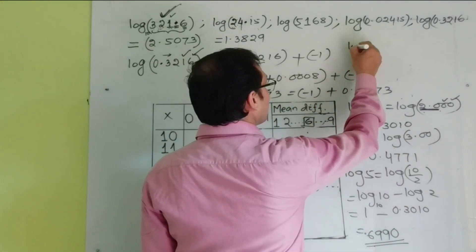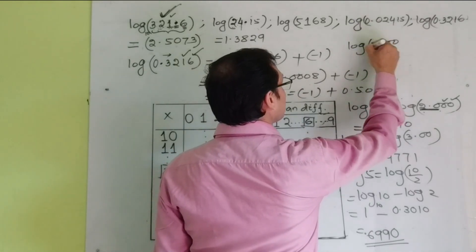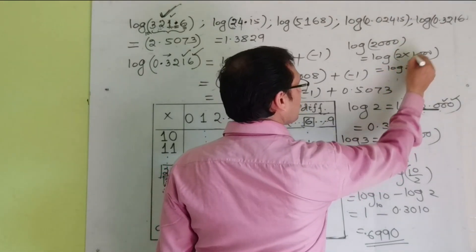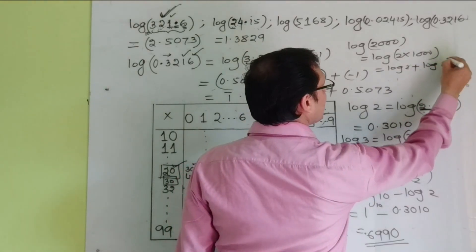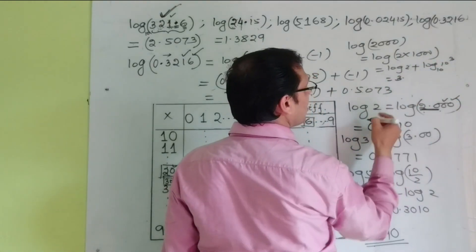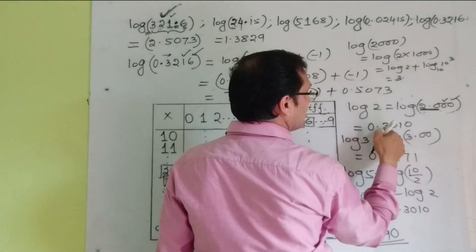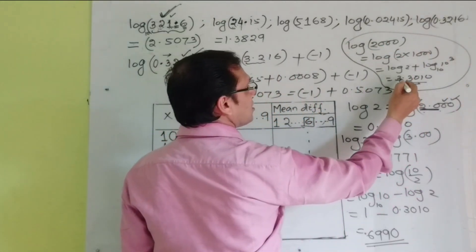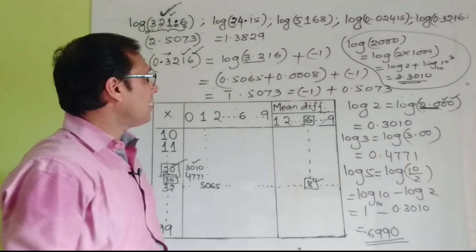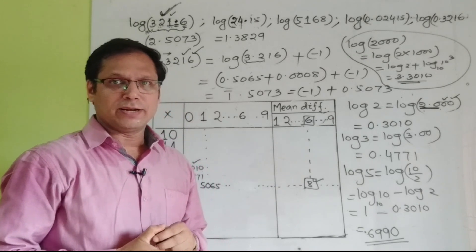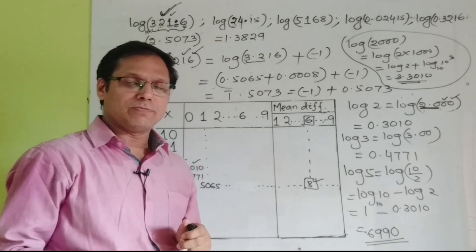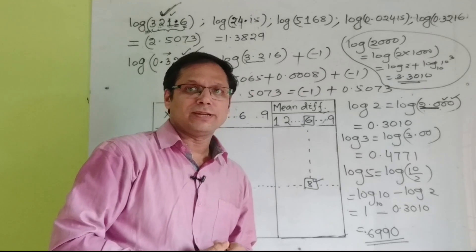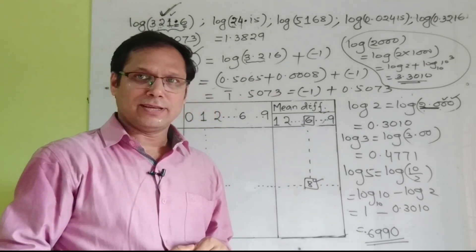To find log 2000: log 2000 = log(2 × 1000) = log 2 + log 1000 = log 2 + log 10^3 = 0.3010 + 3 = 3.3010. In this simple way, you can find the log of any number — whether less than 1, greater than 1, or decimal. In the next episode, we will discuss how to use the antilog table. Until then, goodbye and thank you.